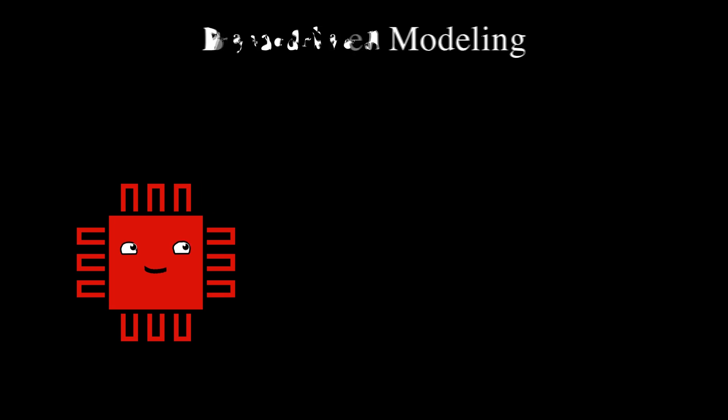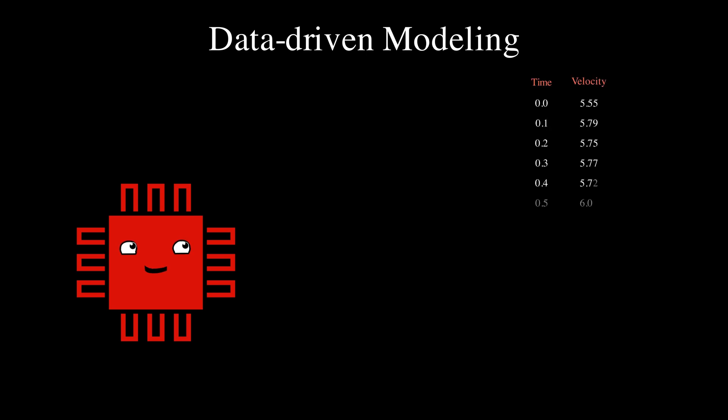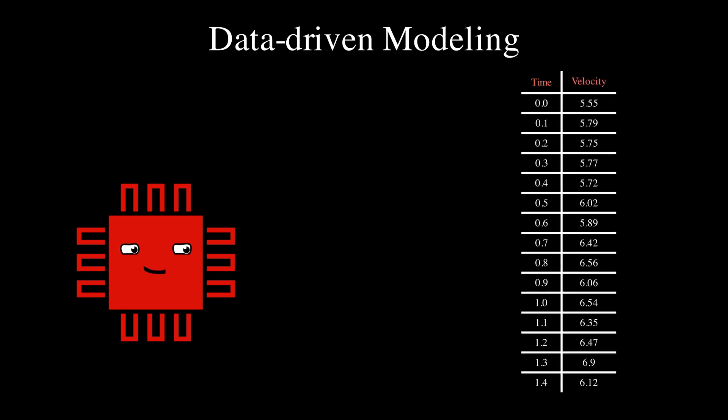However, a different type of mathematical modeling has exploded recently and this is known as data-driven modeling. The idea here is that instead of using a set of physics laws, we just collect data practically and create a model that explains the observations best, such that we can use this model to make predictions for unknown input values.